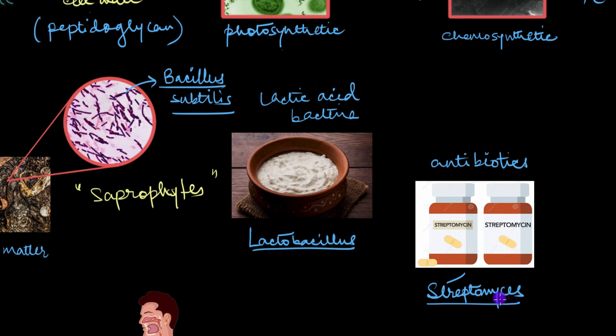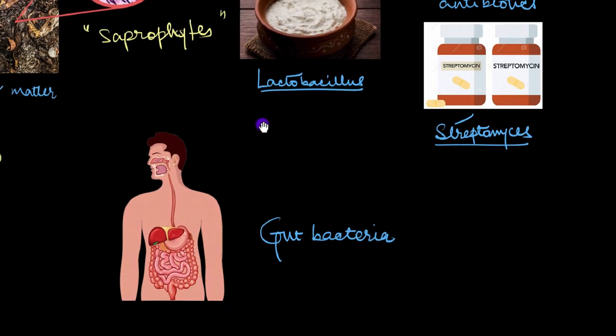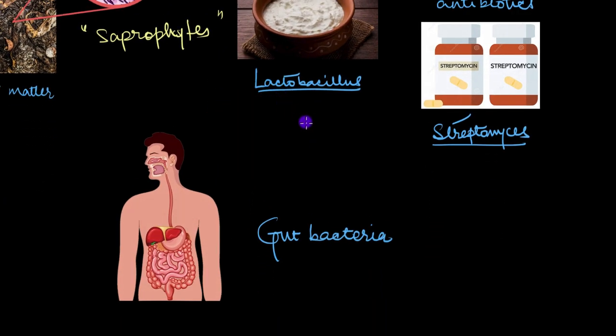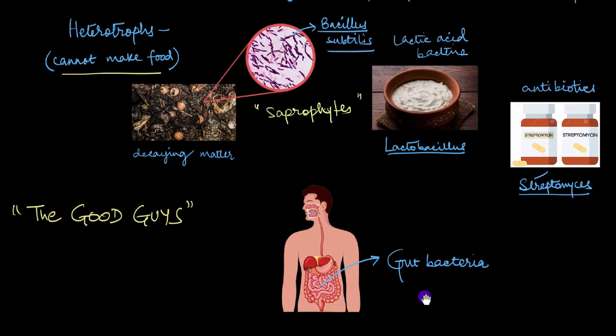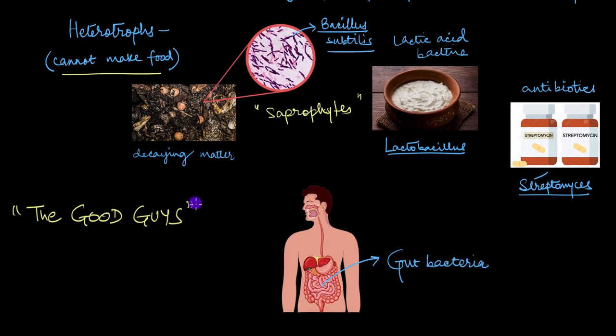Some bacteria are also genetically modified for various purposes. Speaking of useful bacteria, there are bacteria even inside our guts. Yes, there are like trillions of bacteria in our gut and they are super friendly. They help us in many ways like making vitamins and keeping us safe from harmful microbes. But as you might have guessed already by now that these are the good guys.